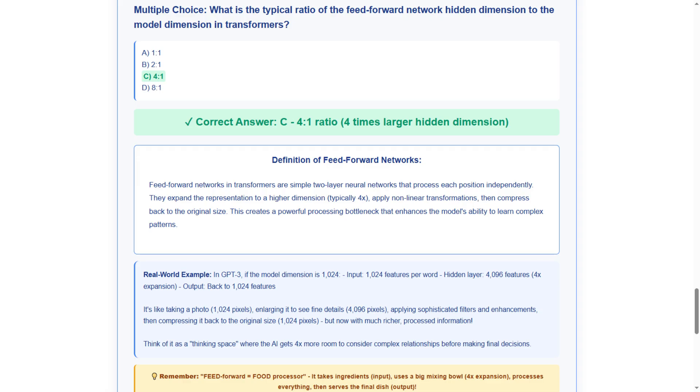Our real-time example shows GPT-3 with 1,024 input features expanding to 4,096 hidden features, then back to 1,024 output features, like having 4 times more thinking space for complex relationships. This shows computational thinking space.